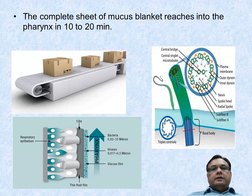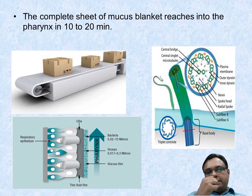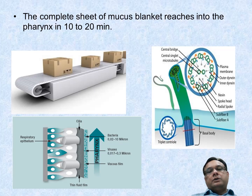The conveyor belt carries trapped items towards the nasopharynx; the same happens in the nose where the conveyor belt of the mucus sol layer and cilia takes the trapped particles and mucus into the nasopharynx. Bacteria are 0.02 to 10 microns and viruses are 0.07 to 0.02 microns. The viscous film moves towards the pharynx in fluid film via cilia.